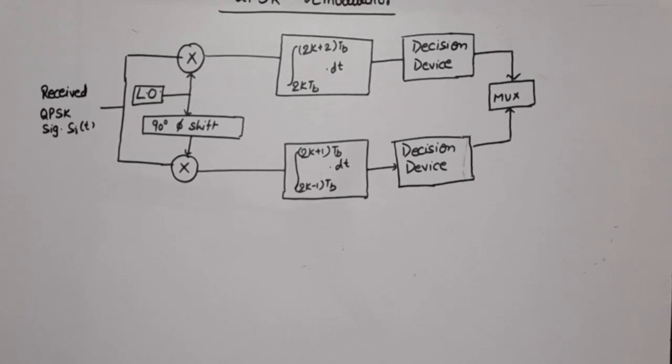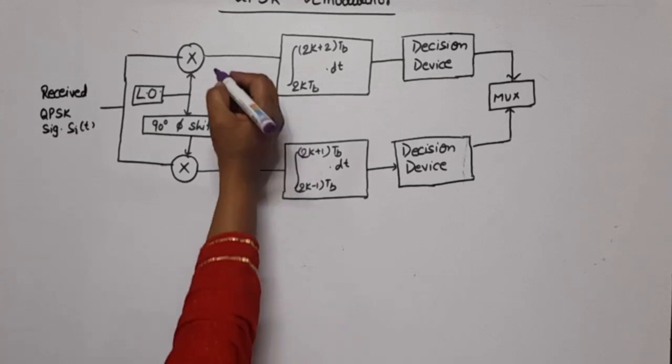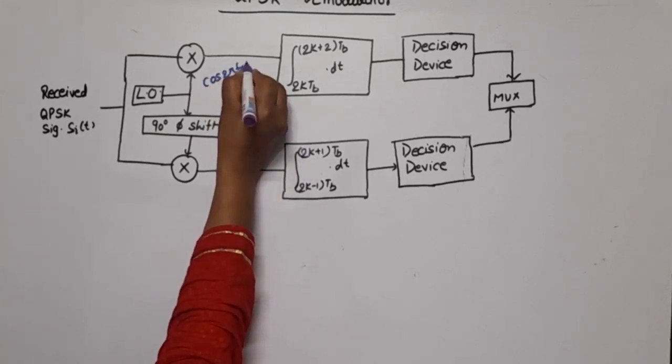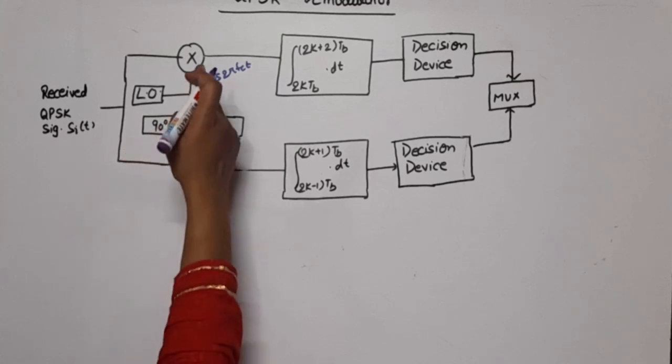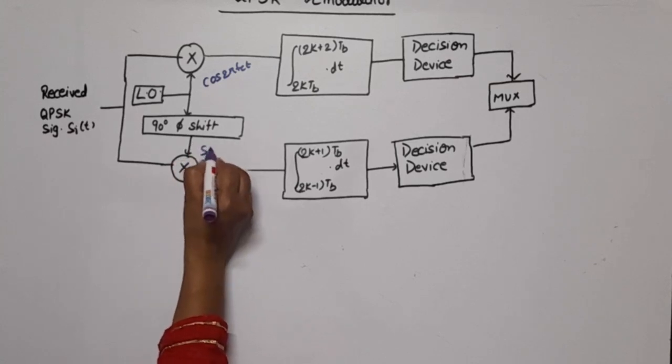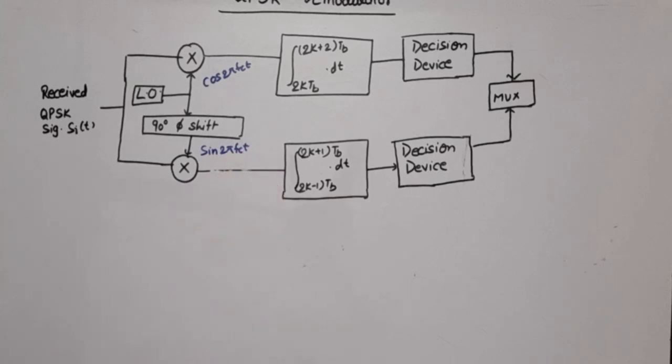A local oscillator will generate a carrier signal cos(2π fc t). This carrier is applied to the first product modulator, and after 90 degree phase shift, the same carrier is applied to the second modulator. After 90 degree phase shift, this will be sin(2π fc t).